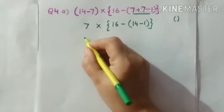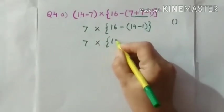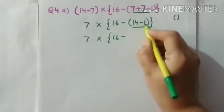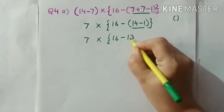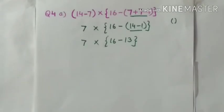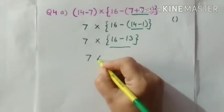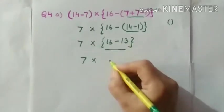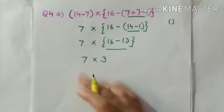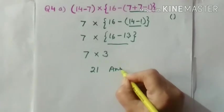Now come to the second step. Second step is 7 into then curly bracket 16 and then we have to solve this bracket so minus 14 minus 1 is 13. Now we have to solve and remove the bracket. Now we have one bracket which is curly bracket so 7 into 16 minus 13, so this we get 3. Now what is the last step? We have 7 into 3, this means 21. So this is the answer.